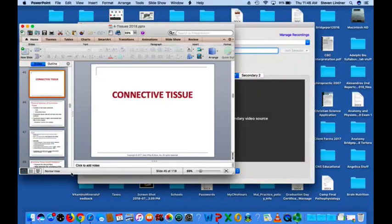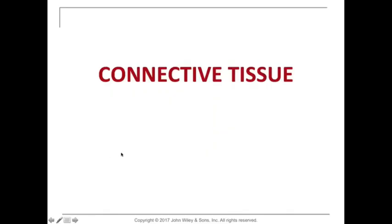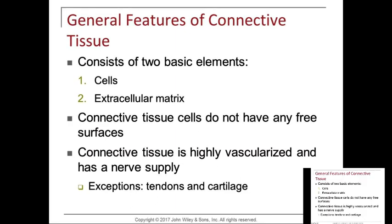We're going to continue with connective tissue. Let's look at some of the general features. Connective tissue primarily consists of two basic elements: cells and an extracellular matrix. The cells are not held closely together like they are in epithelium, but spread wide apart, with lots of ECM or extracellular matrix.